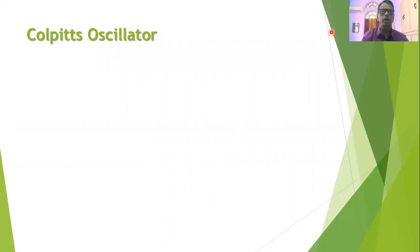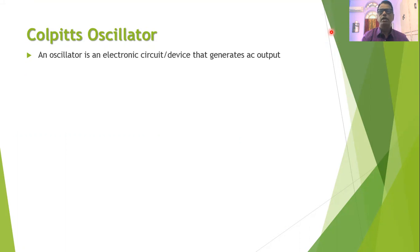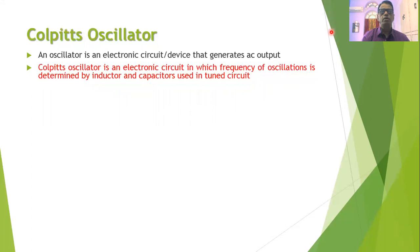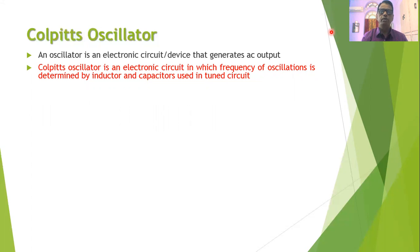The Colpitts oscillator, like any oscillator, is an electronic circuit that generates an AC output without any AC input — it is a signal generator circuit. The frequency of oscillations is determined by the components used in its tuned circuit. Colpitts oscillator is one of the LC oscillators in which the tuned circuit consists of an inductor and capacitors.